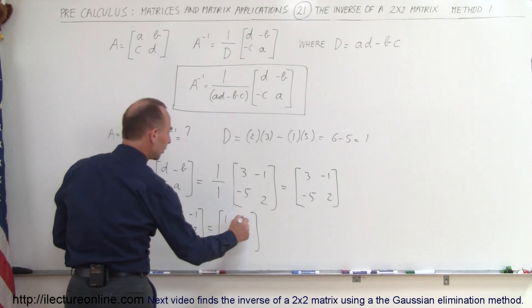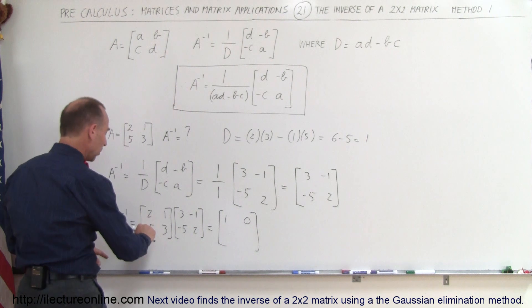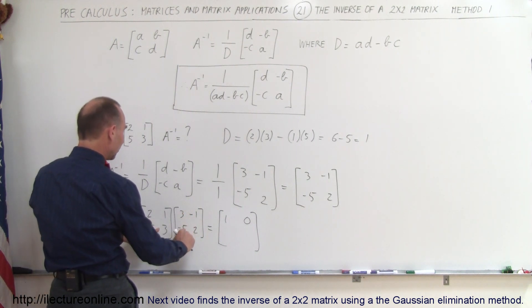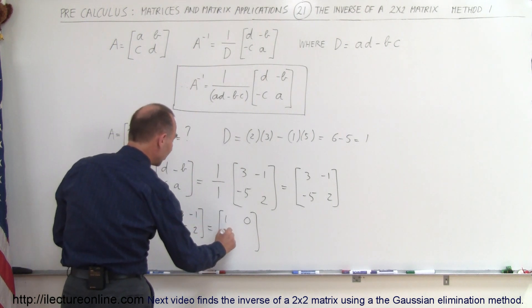We multiply this row times this column, we get 5 times 3 is 15, plus 3 times the negative 5 is a minus 15, 15 minus 15 gives me a 0.